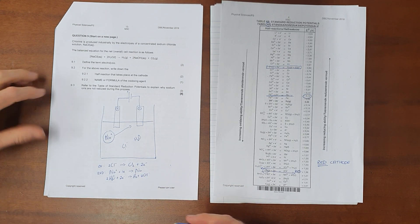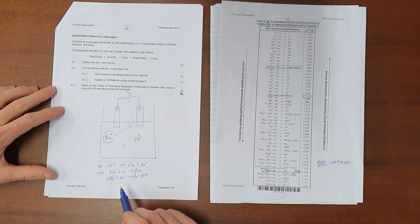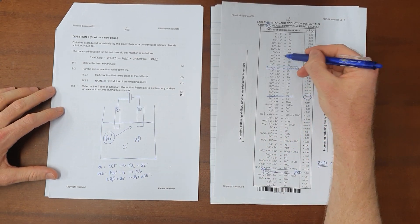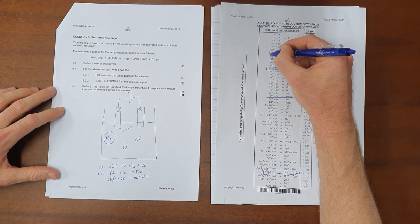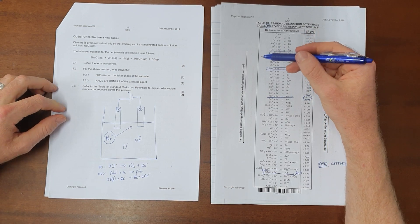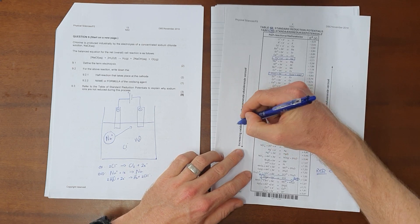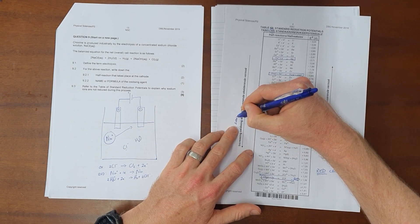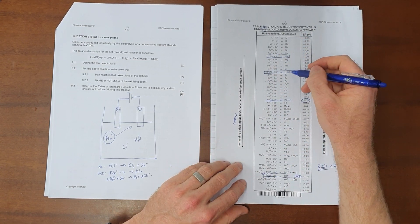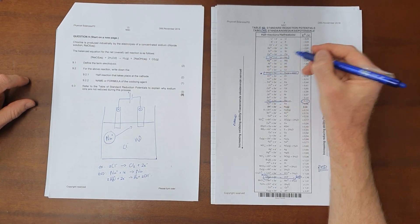Now the problem that we are faced with here is that we have two possible reduction half reactions, and the way that we determine which of those is more likely to happen is by comparing them to each other on this table. So here we have our sodium half reaction, and what we can see is that as we move down the table we increase the oxidizing ability, which also means we increase the ability to be reduced, meaning that the further down the table the more likely a substance is to be reduced. And so we say, since water is below sodium on this table...